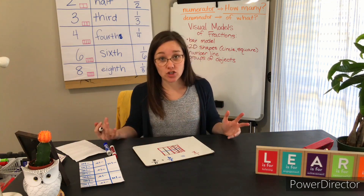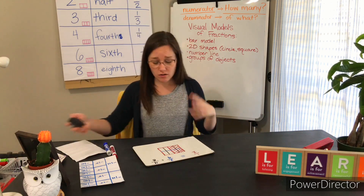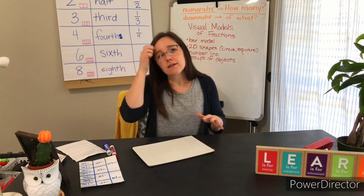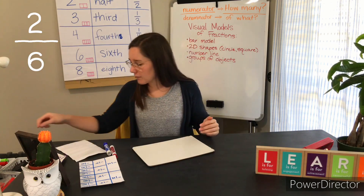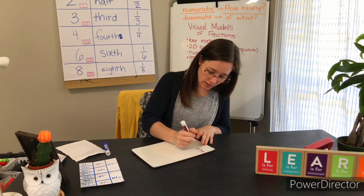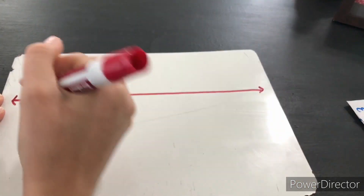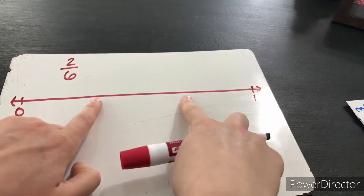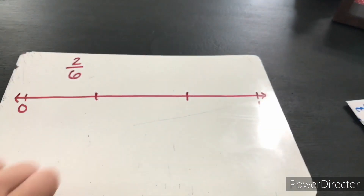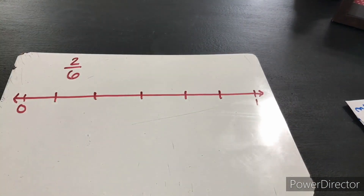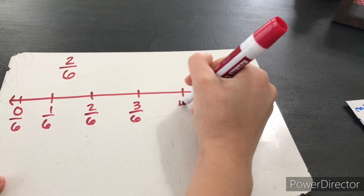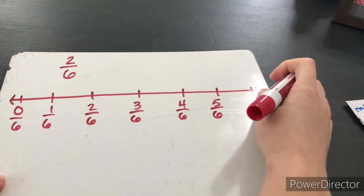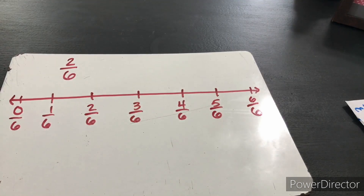You can do this on a number line too, a circle, bar model — whatever model you like. Now let's say we have a fraction that we don't necessarily know how to make smaller pieces of. Let's say we have two-sixths. I'm going to draw two-sixths for you. Let's do this one on a number line. I'm actually going to partition my whole number line this time and label all of the fractions, just to make sure that everybody is seeing what we're doing. So here we have our sixths — I'm going to put a dot on two-sixths. That's the fraction I'm trying to find something equivalent to.